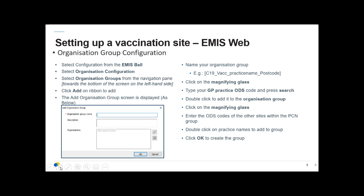Click Add on the ribbon and you'll see the screen as shown. Name your organisation group, being sure to be explicit that this is the COVID vaccination, and also remember that including the postcode is beneficial if you have a common practice name such as High Street Surgery.